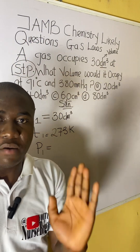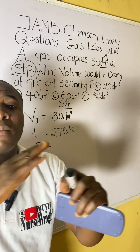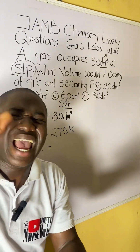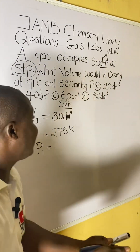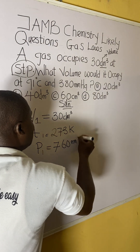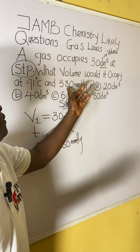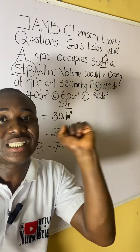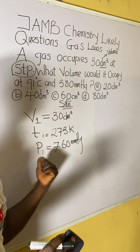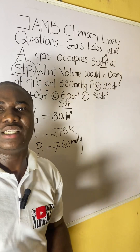Now for standard pressure: we have different standard pressure values depending on the unit used. You can see the second pressure is expressed in mmHg, so you must write standard pressure in mmHg as well, which is 760 mmHg. For example, if the pressure were expressed in atm (atmosphere), the standard pressure would be 1 atm instead.